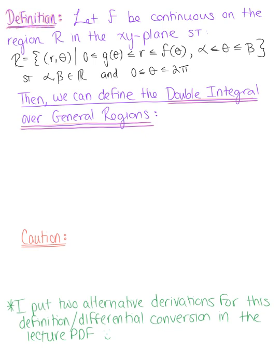So with this general polar region, we can then define the double integral over a general region as follows. Keep in mind, from the previous sections of double integrals in rectangular regions and general regions, we have that the volume is defined as the double integral over r of the function f of xy dA. Converting this now to polar coordinates, we can say that this is the double integral, and we'll plug in our bounds here, so from alpha to beta, the integral from g of theta to f of theta.